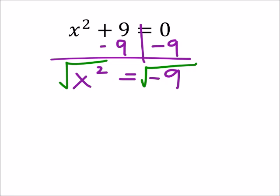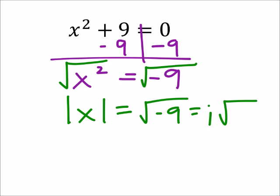If I square root both sides, then I have the absolute value of x equals the square root of negative 9, which would be the same as i times the square root of 9.